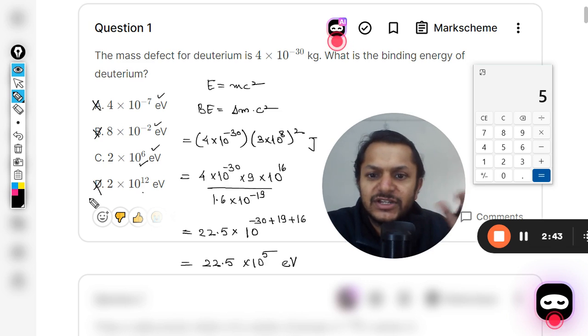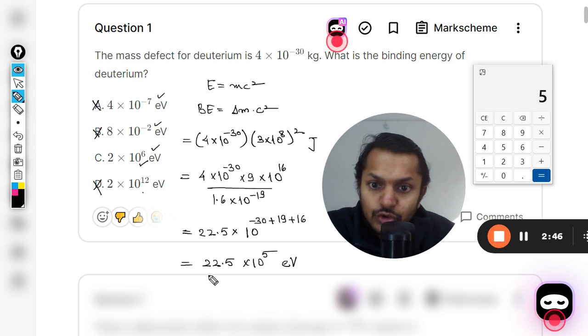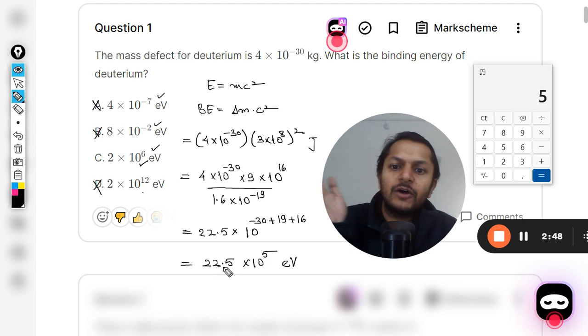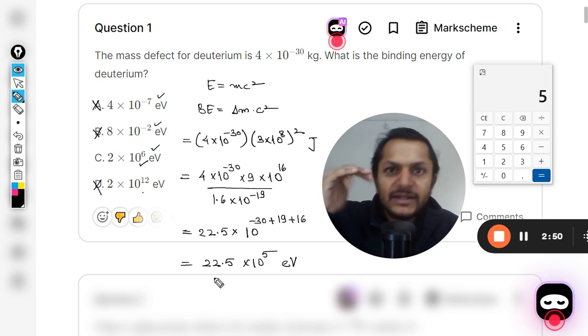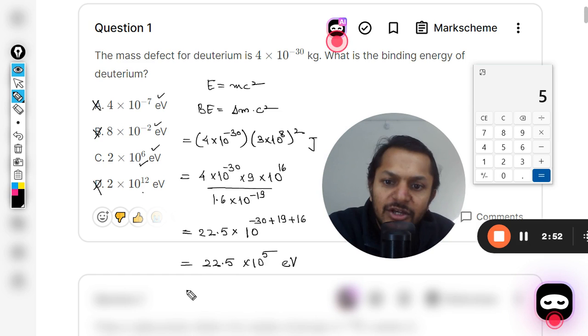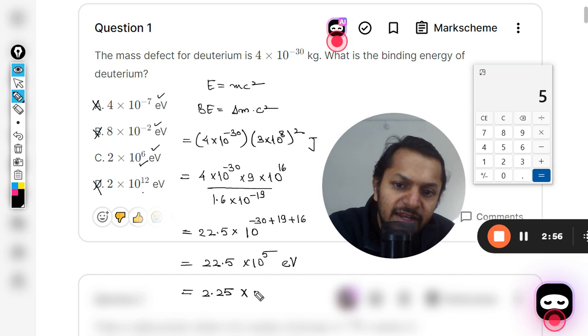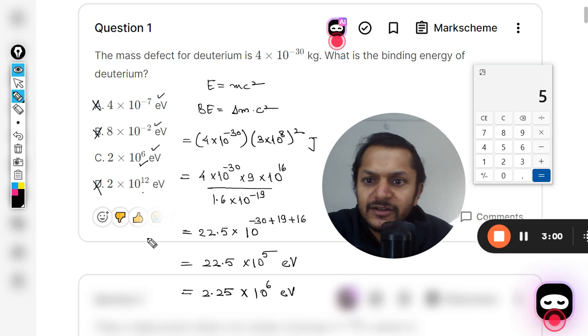So definitely the answer will be C, but somehow we have to create the answer C. And how are we going to do it? See, this is about 2, so the decimal has to be moved around. So this will be multiplied by 10 and divided by 10.